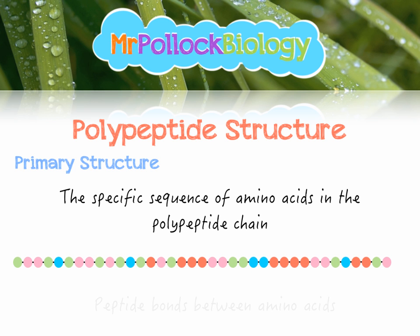There are four main levels of polypeptide structure. The primary structure, the first level, is the specific sequence of amino acids in the polypeptide chain. This is really important because the primary structure will define all the subsequent levels of protein structure. If one amino acid is out of sequence in the wrong place, the whole chain will fold up in the wrong way. The bonds present at this level are the peptide bonds between each of the amino acids. Note that if we have five amino acids forming a pentapeptide, we get N minus one water molecules produced — so four.